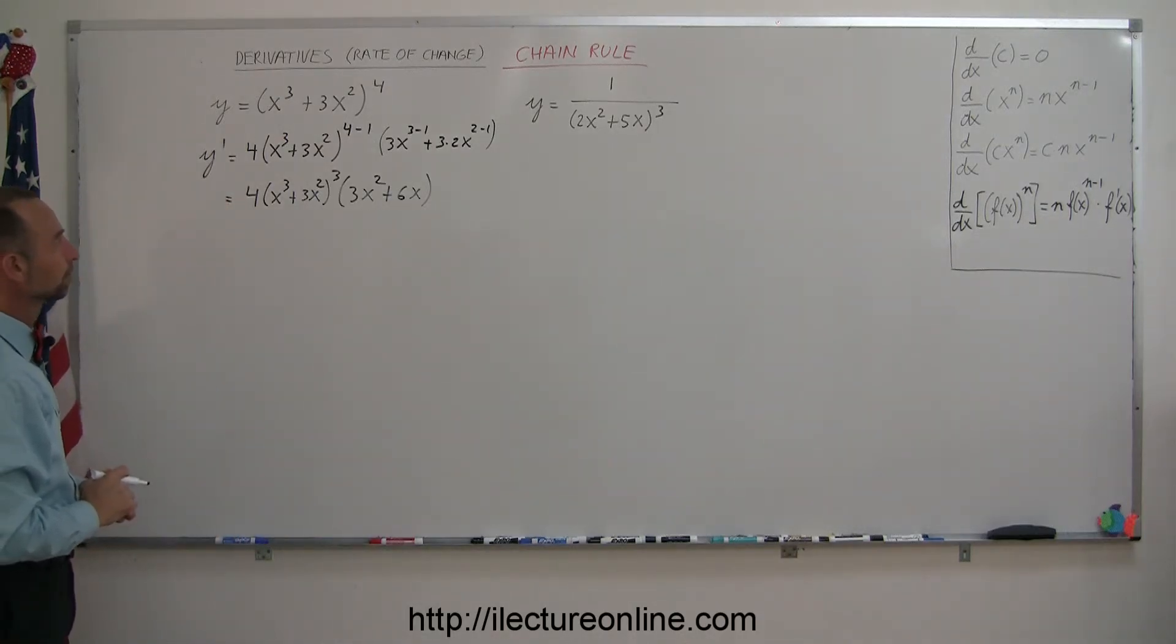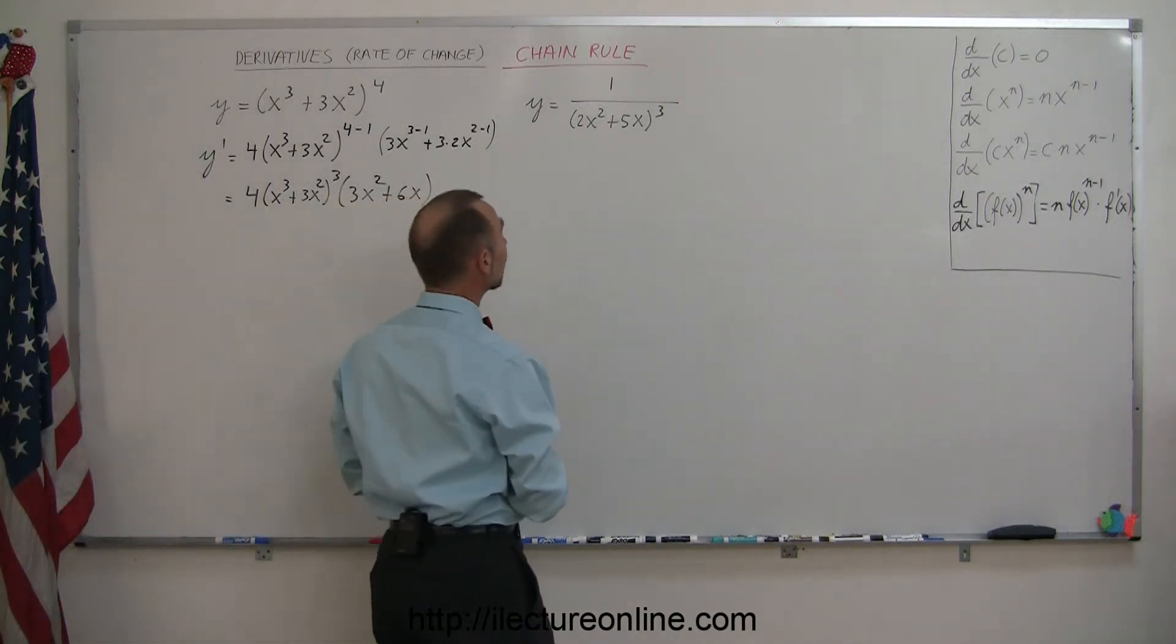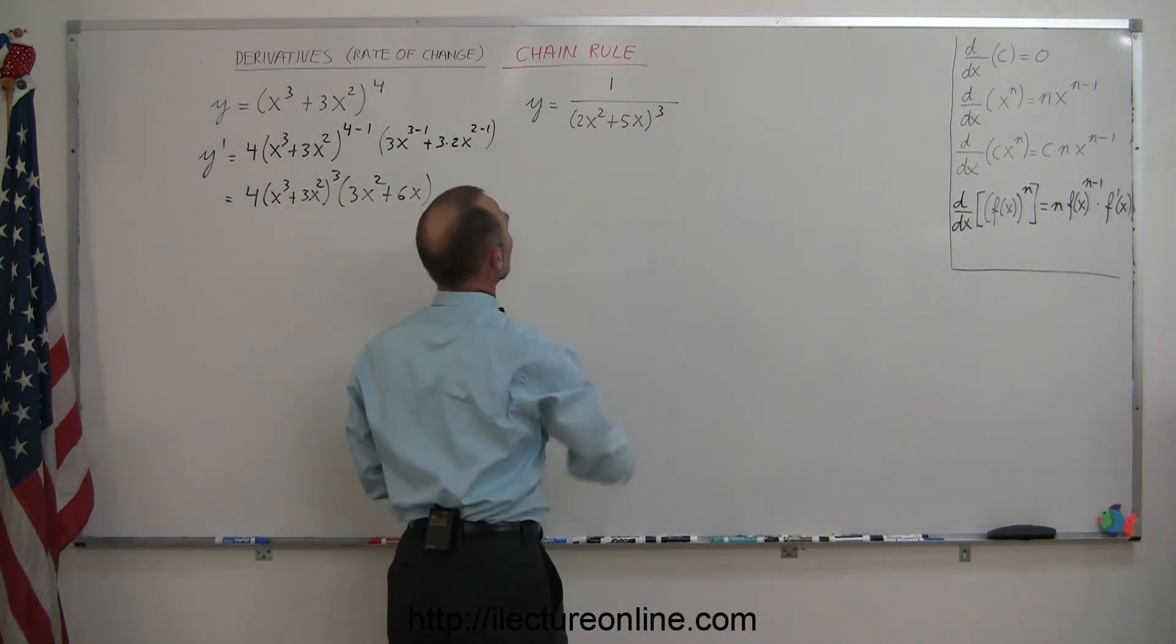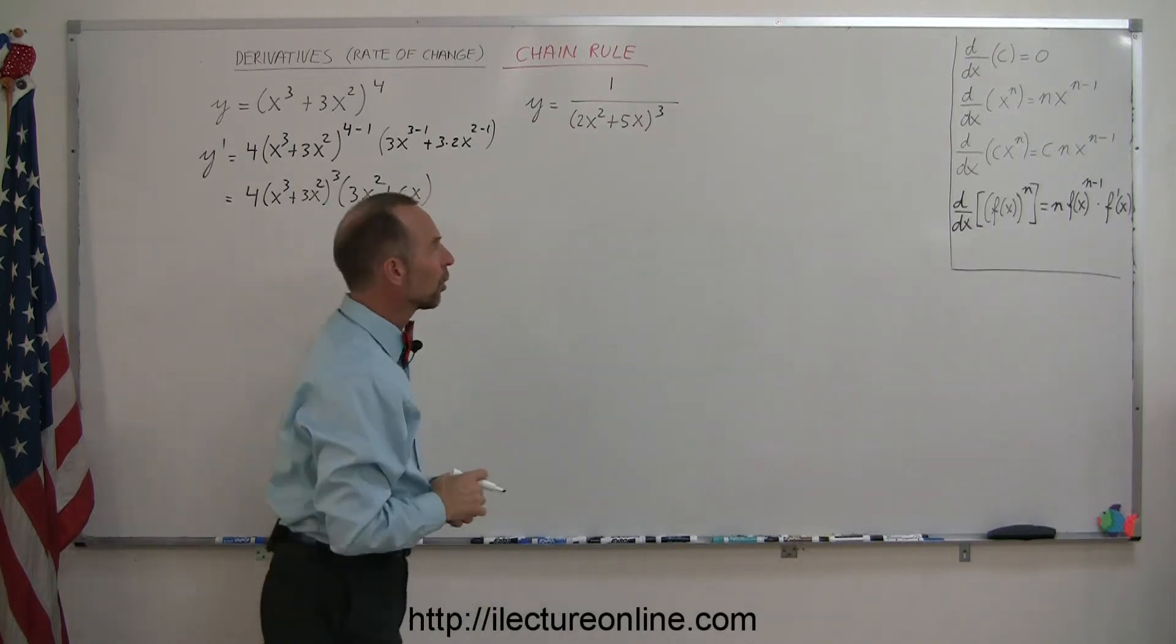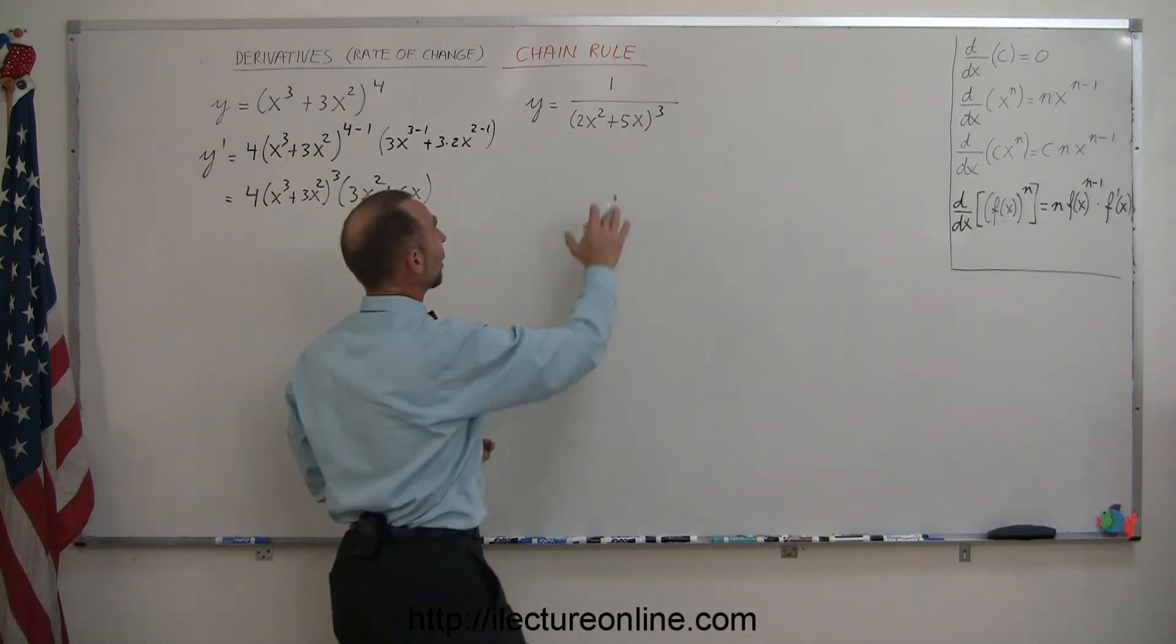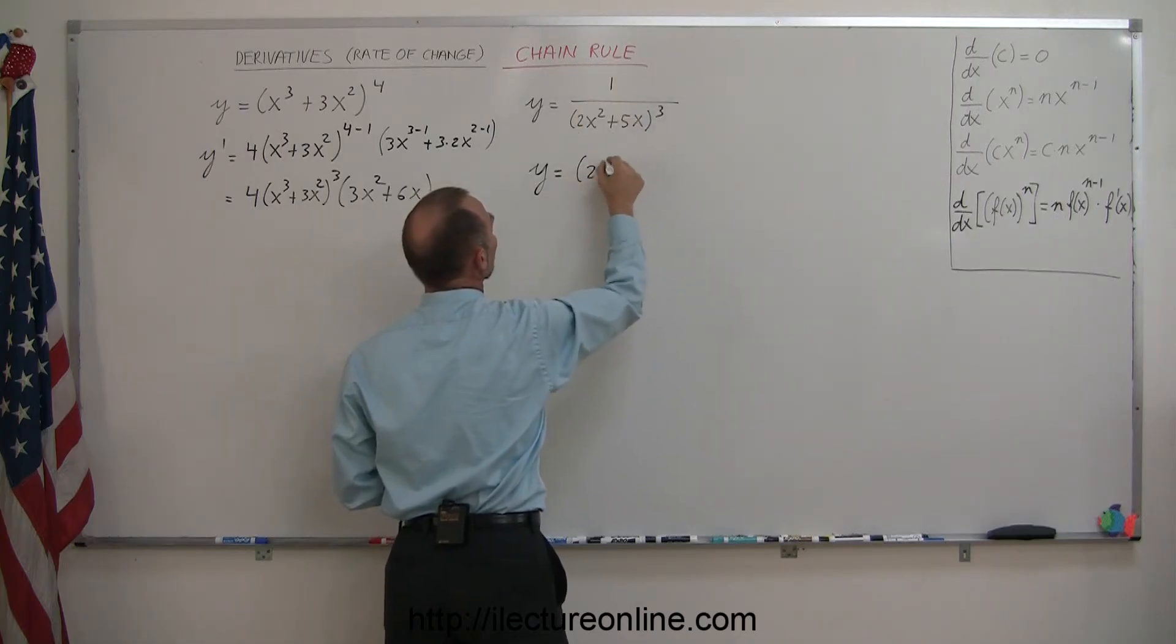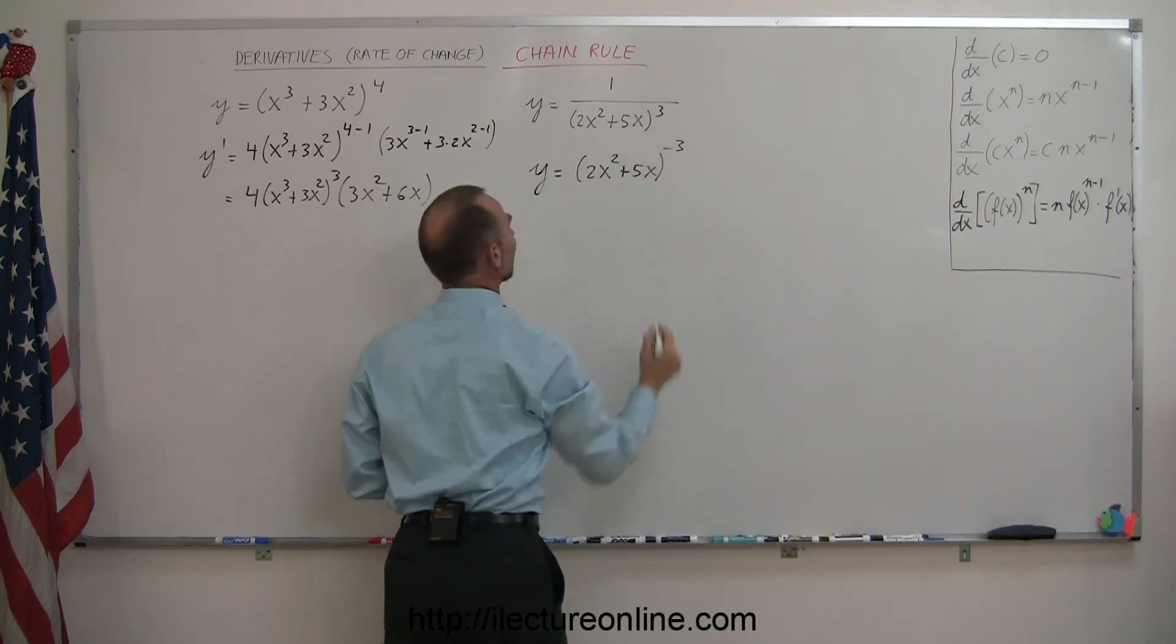Okay, so let's do the second example. Now, you say, well, wait a minute. I can't use the chain rule here because that looks like a quotient. And for that, we normally would use the quotient rule. But since we have a 1 up there, we can actually rewrite this as y is equal to 2x squared plus 5x raised to the minus 3 power.